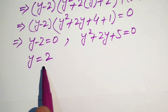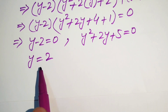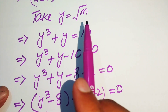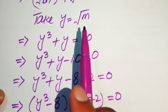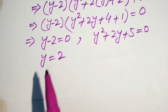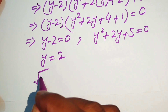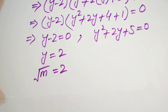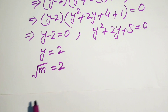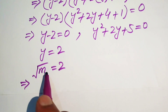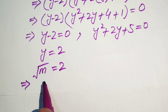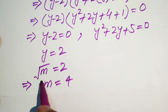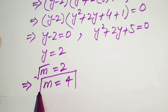In the first case, y equals 2. Since y equals the square root of m, we back-substitute this value. Substituting y equals square root of m equals 2, we take the square on both sides, which gives us m equals 4.